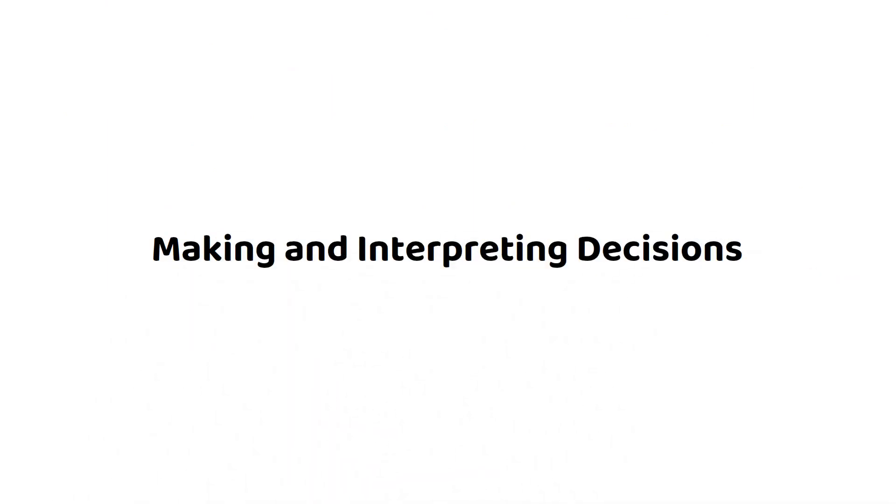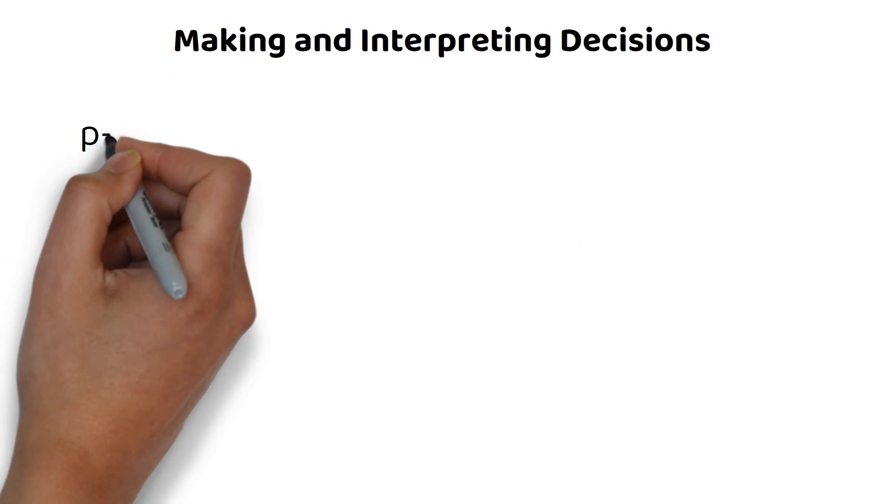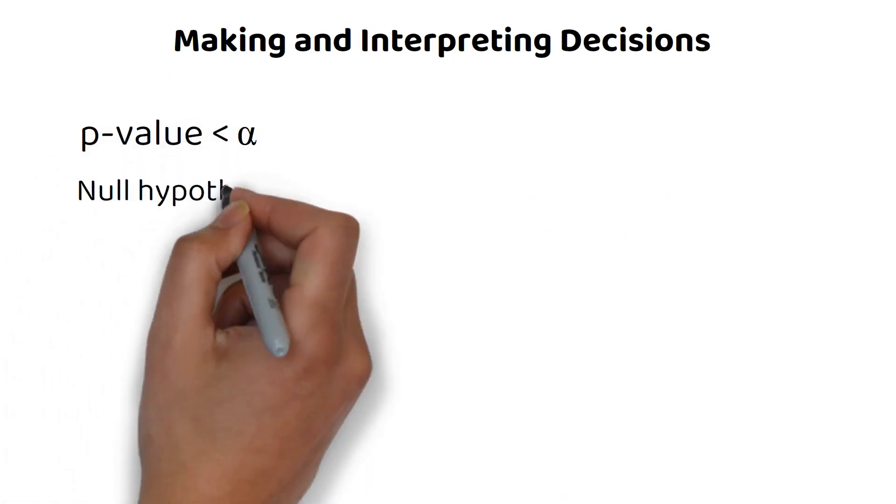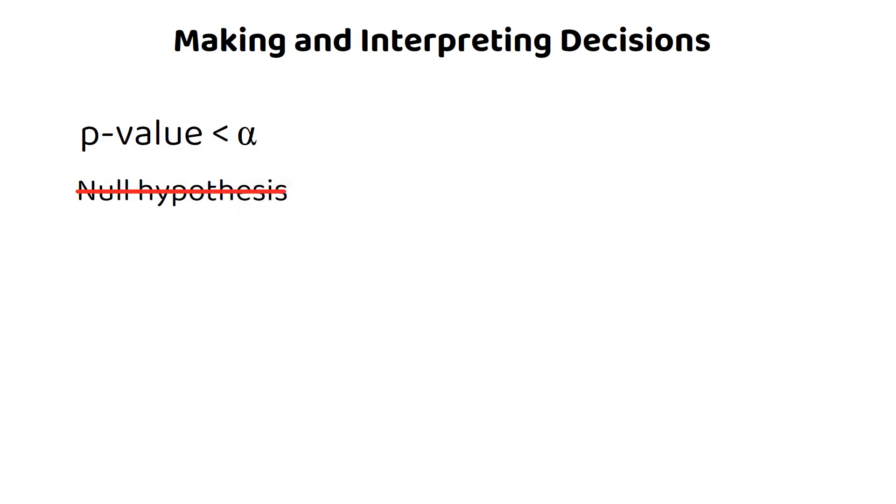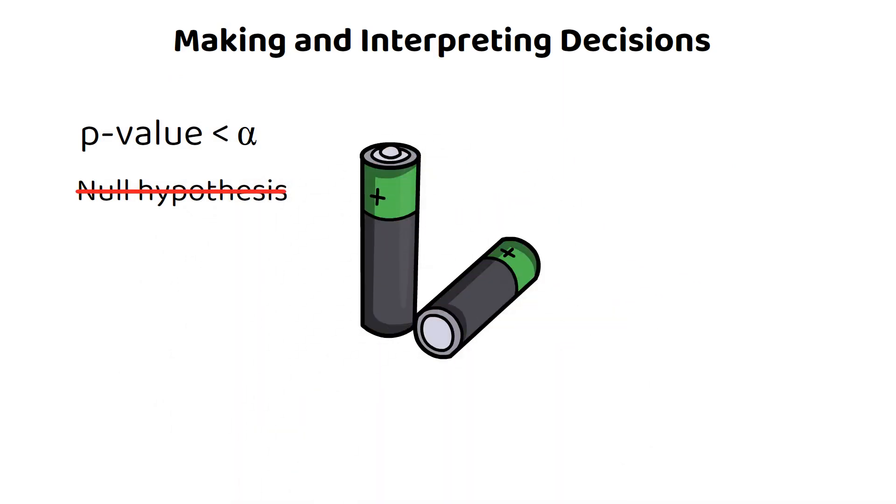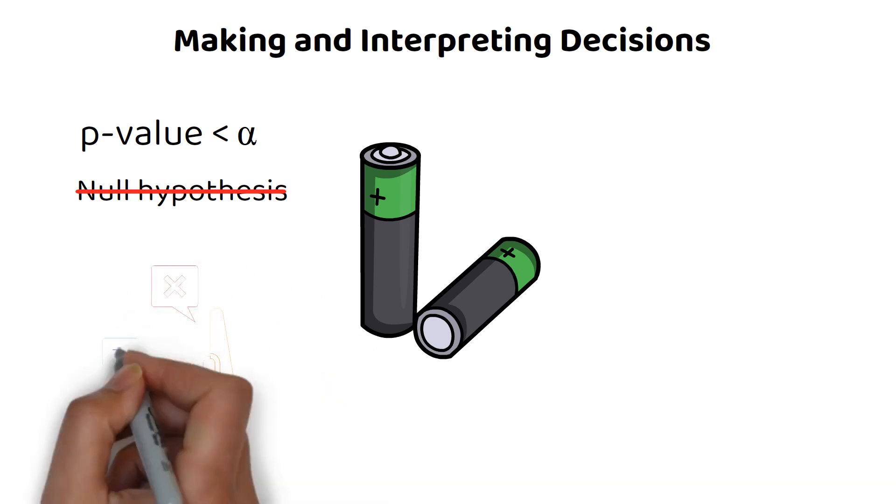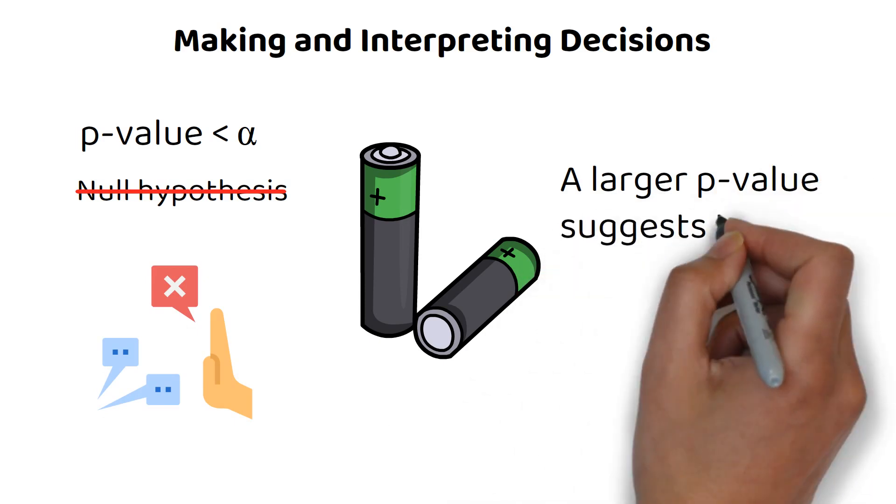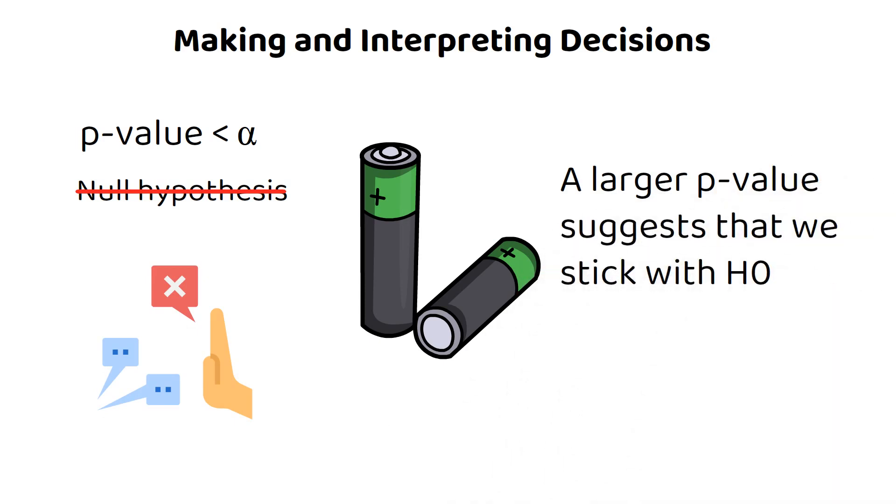Making and interpreting decisions: If our p-value is less than our significance-level alpha, we would reject the null hypothesis. In the context of our battery example, rejecting the null hypothesis means we have enough evidence to contradict the producer's claim. Conversely, a larger p-value suggests that we stick with the null hypothesis.